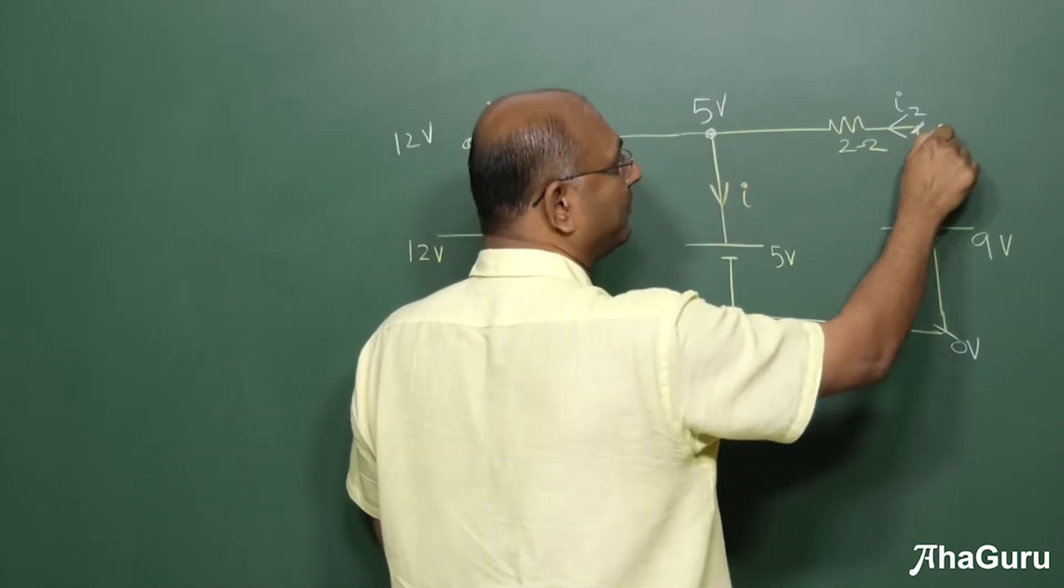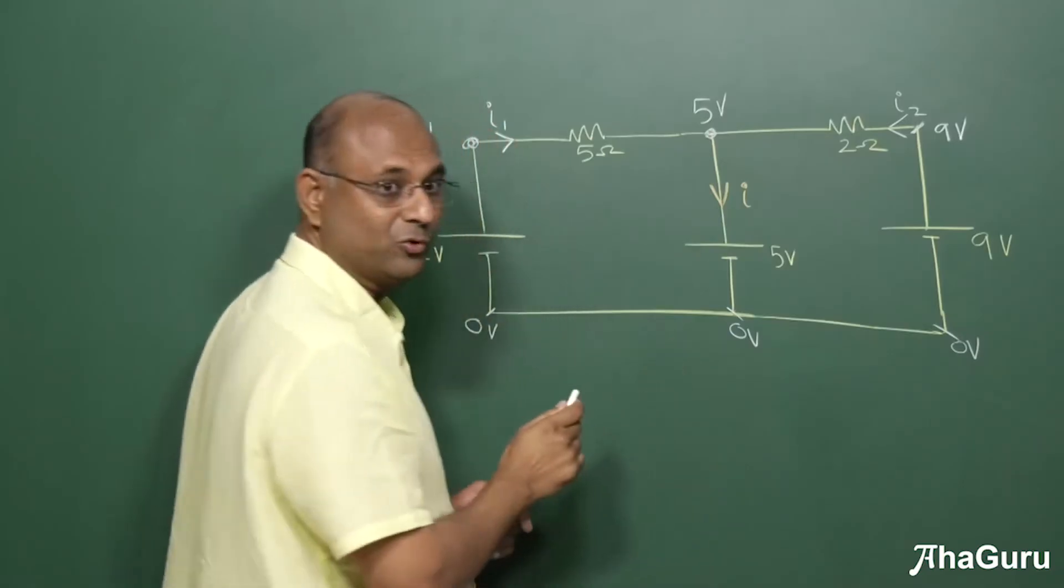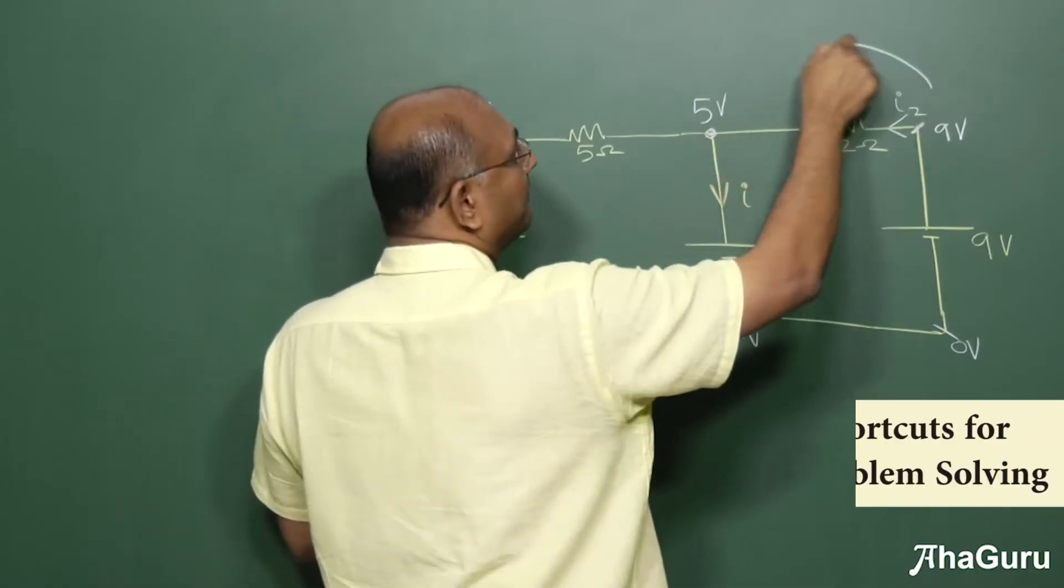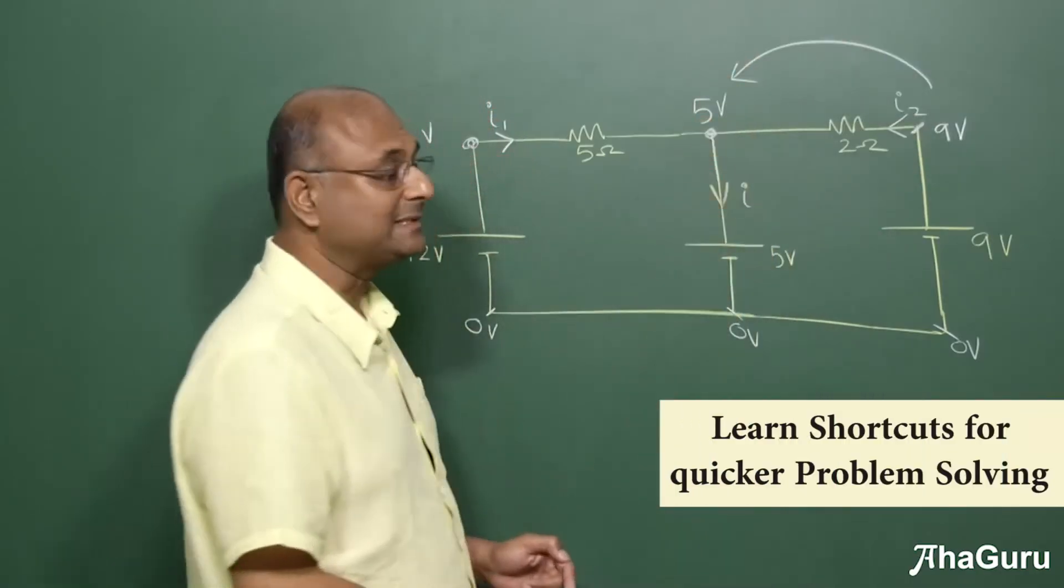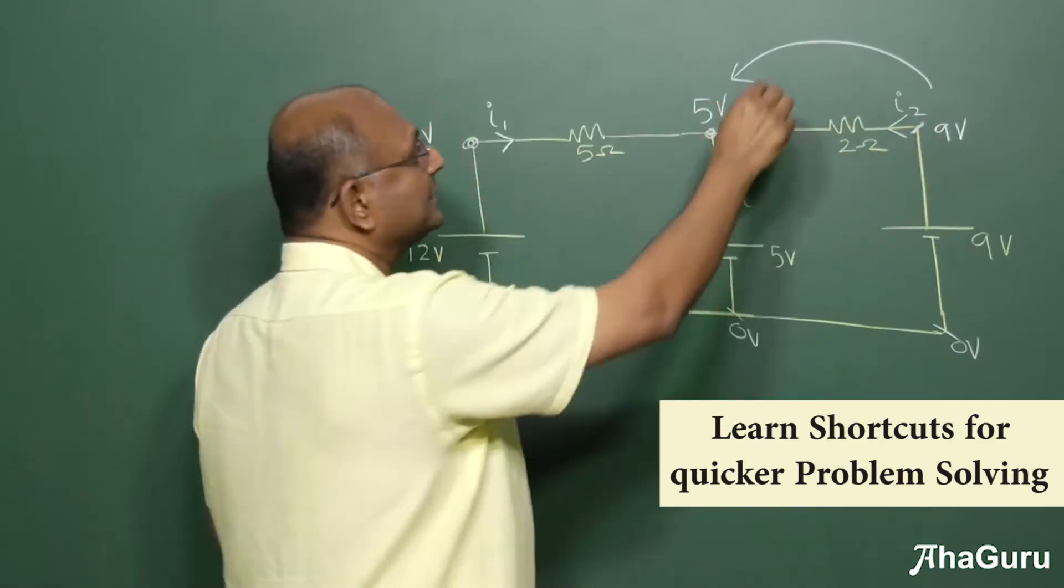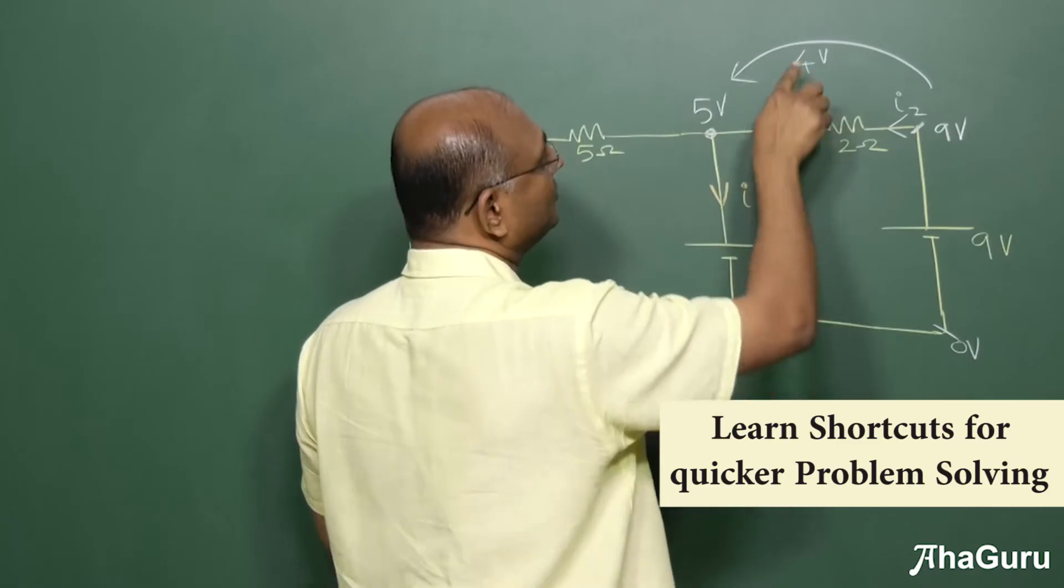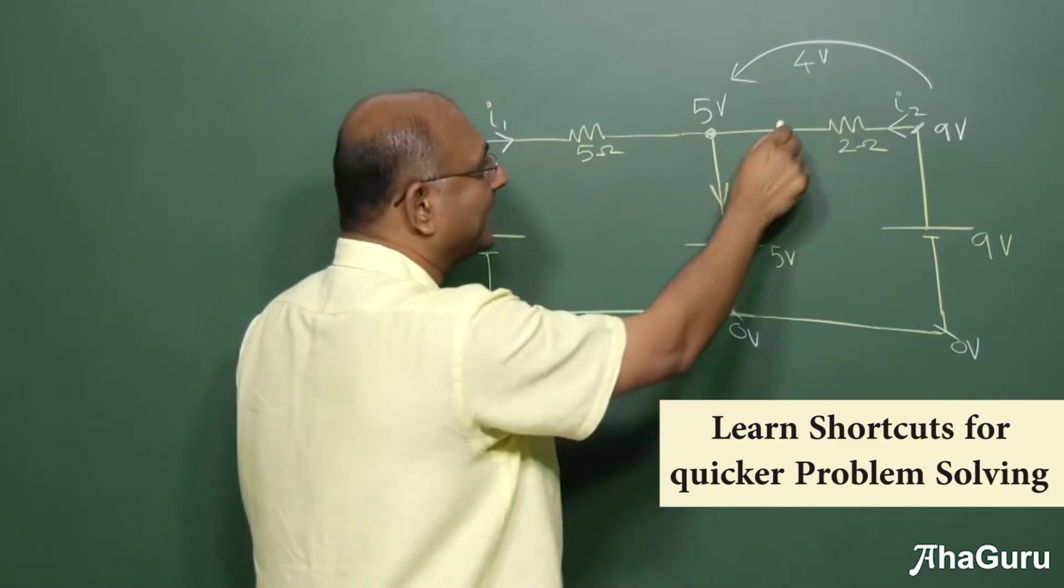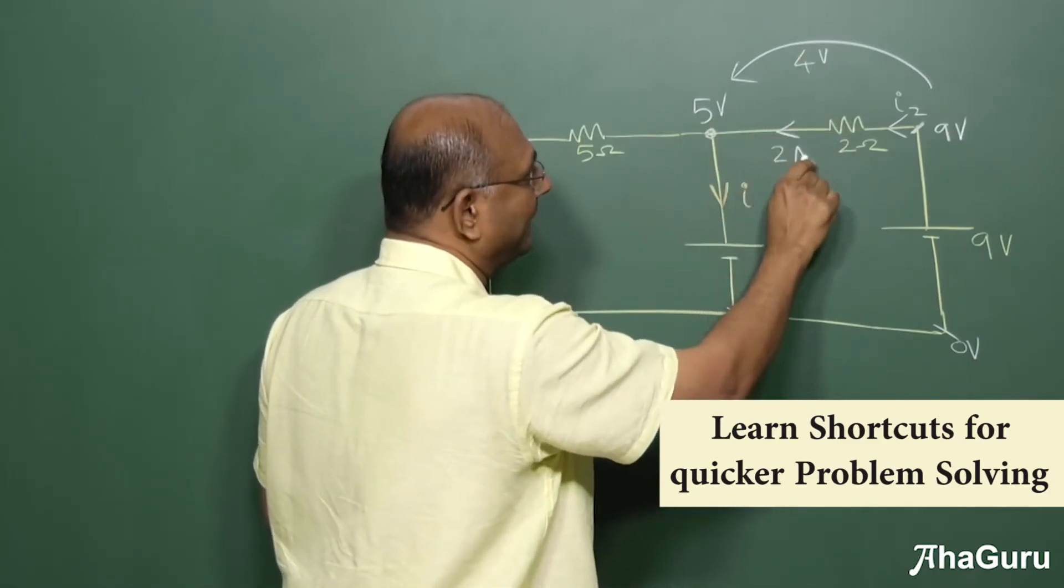This is 0, and so that point has potential 9 volts. So if you see the potential drop from that side here to here, 9 minus 5, that is 4 volts. And so 4 volts by 2 ohms gives me the current, which is 2 amperes.